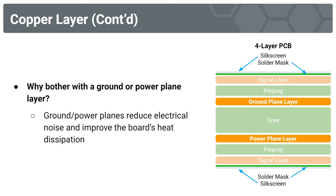So why bother with the ground or power plane layer? Ground and power planes are able to very effectively reduce electrical noise and improve the board's heat dissipation. Electrical noise is this random variation in voltage and current experienced due to a number of factors in electrical circuits, both internal and external. This noise can pose a risk to the integrity of our signals, and may affect components which are sensitive to variations in voltage and current.